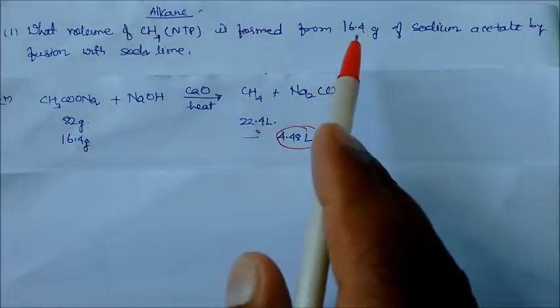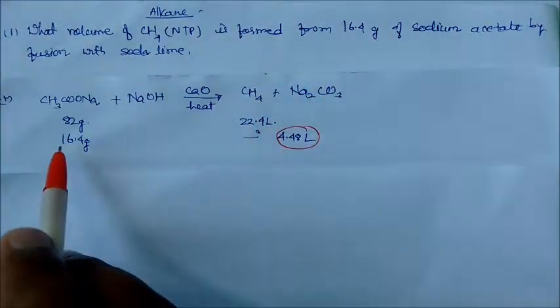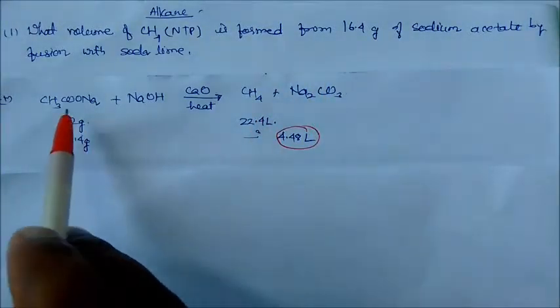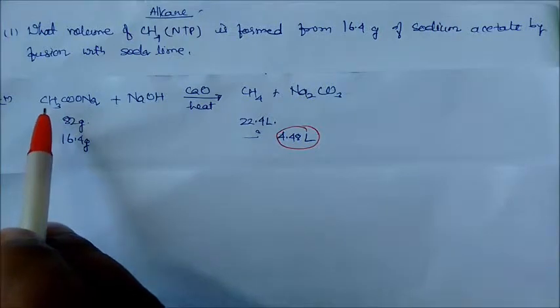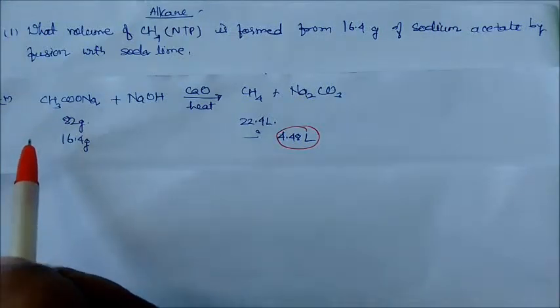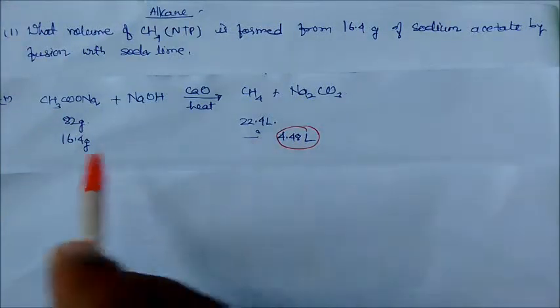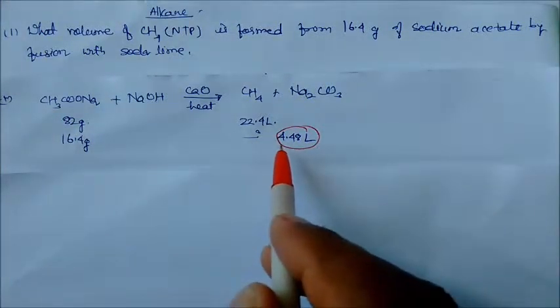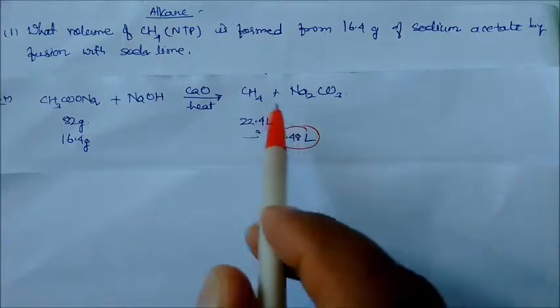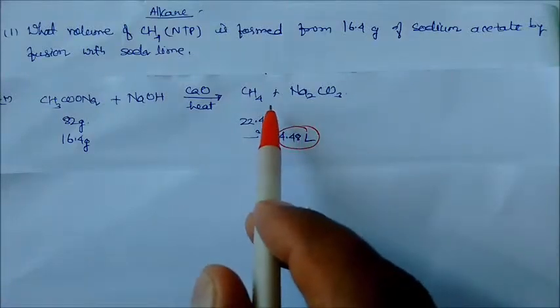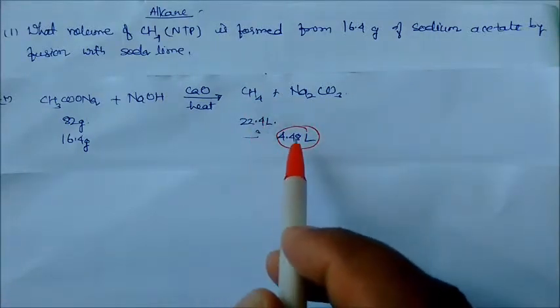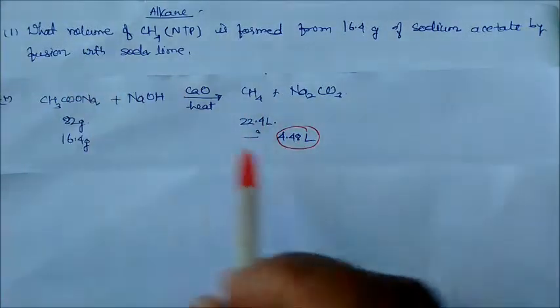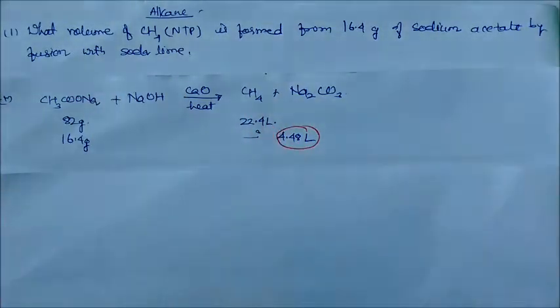Now the problem is asking for 64.4 grams. So taking 64.4 grams of sodium acetate and using the unitary method, we will get 4.4 liters of methane gas. This is the volume of methane gas at NTP.